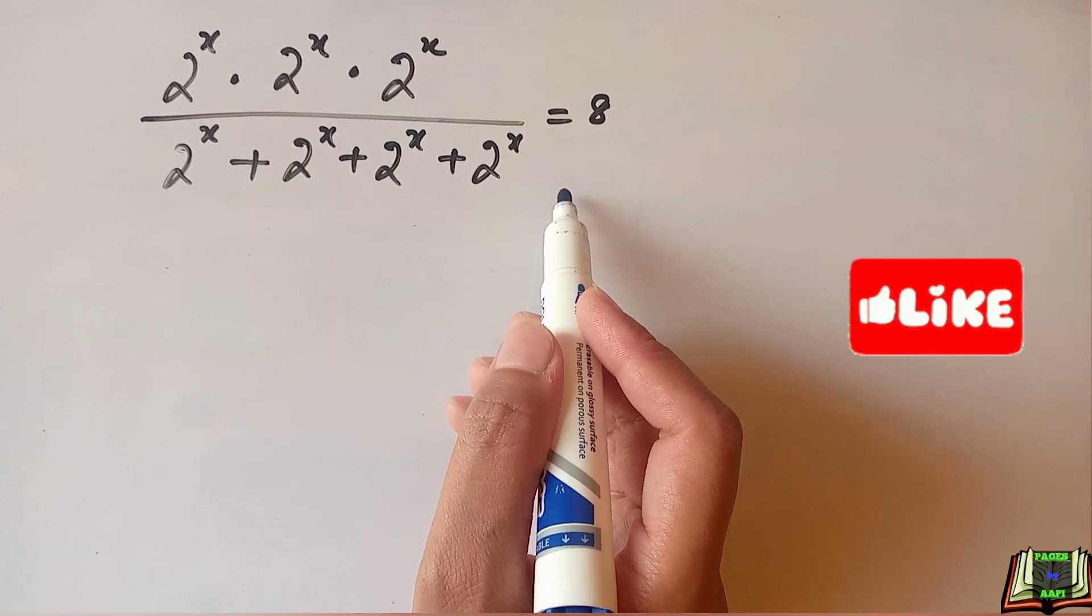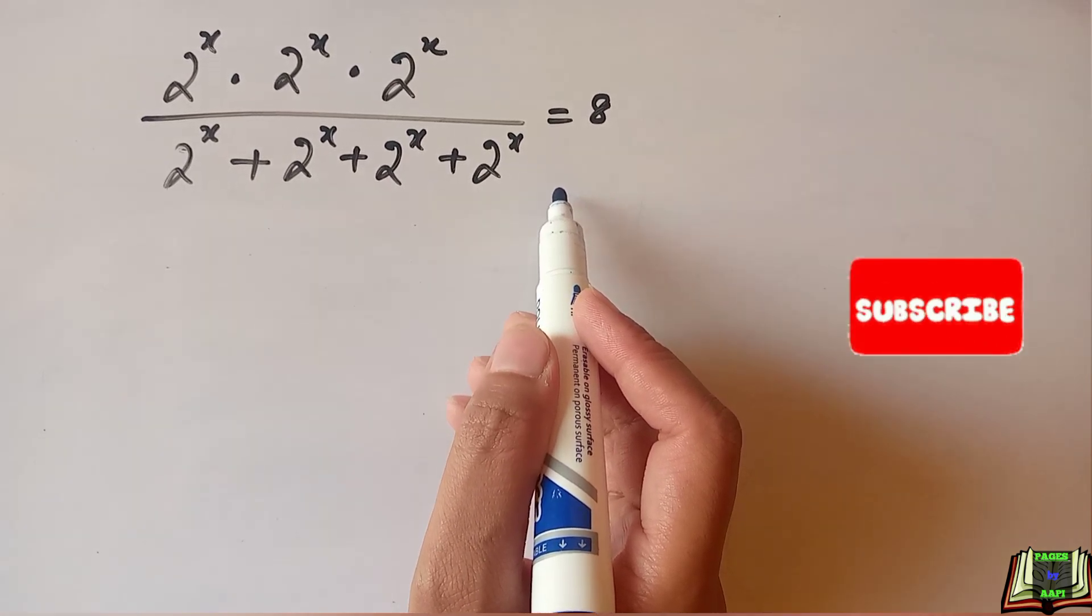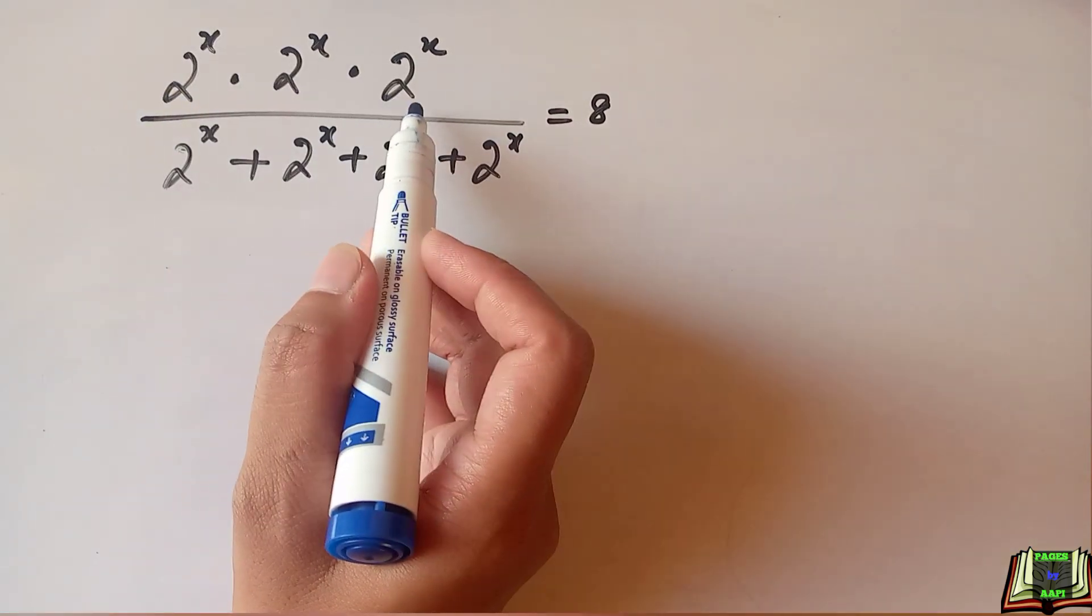Now let's move to the solution. We can write this 2 to the power x times 2 to the power x times 2 to the power x as 2 to the power x plus x plus x.